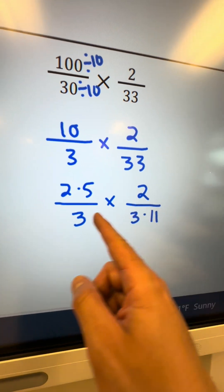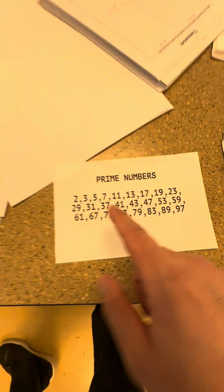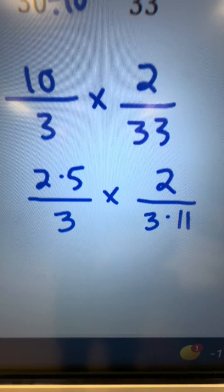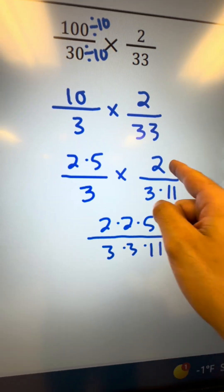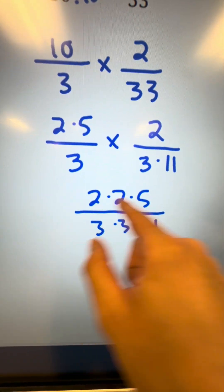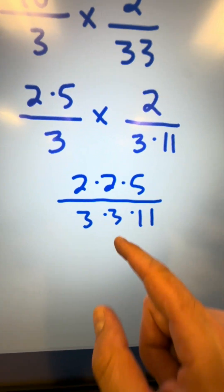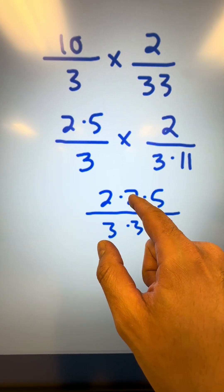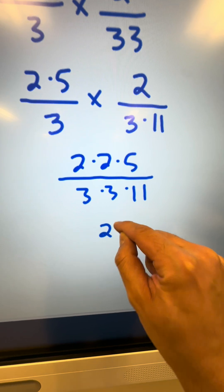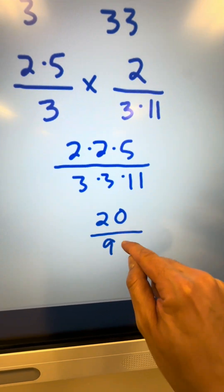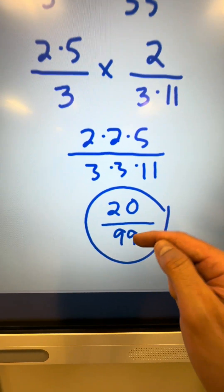Just use a multiplication chart. And I can see — if you're not sure what the prime numbers are, have that list handy. You'll see that 3 is prime and 11 is prime, so I cannot break these down any further. Next, I reorganize numerators and denominators all together in least to greatest order. There are no common factors between my numerator and denominator, so I multiply: 2 times 2 is 4, 4 times 5 is 20; 3 times 3 is 9, 9 times 11 is 99. Final answer: 20 over 99.